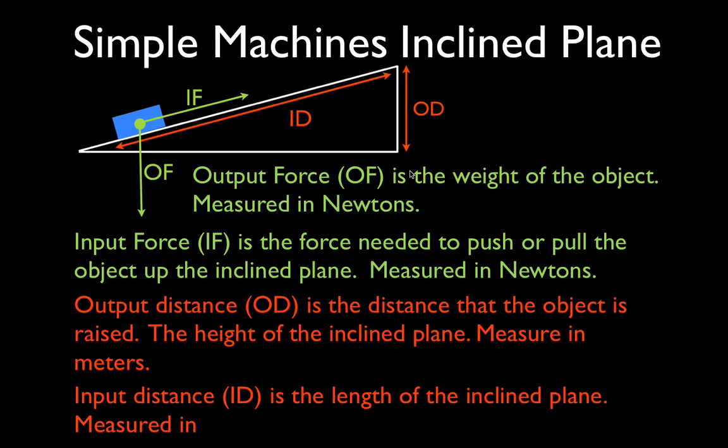Now the input distance is the distance that you have to put into the machine, and it's the distance over which the input force is applied. The input distance, abbreviated ID, is simply the length of the inclined plane.